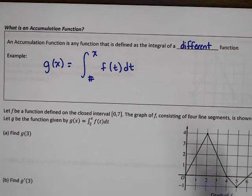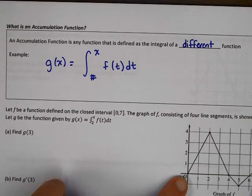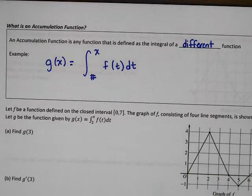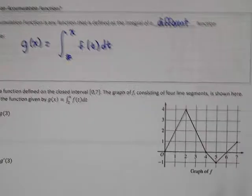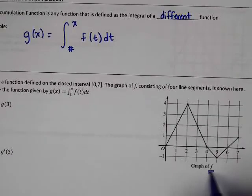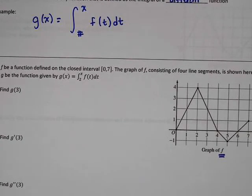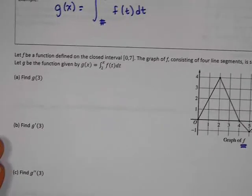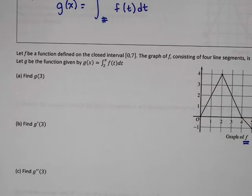Let f be a function defined on the closed interval from 0 to 7, consisting of four line segments as shown. g is defined as the integral of f — so this is the graph of f, and g is the integral of this function. All of the questions ask us about g, so we're going to have to use f to talk about g.